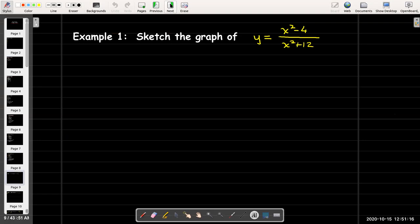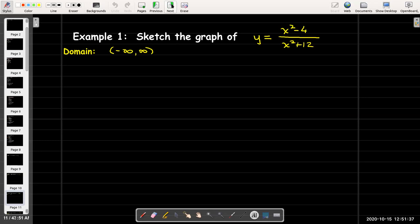So let's look at our first example. It's a rational function, y equals x squared minus 4 over x squared plus 12. When I look at the domain, the denominator can never be zero. It's a number squared, and then you add 12. Smallest it can ever be is 12. So the domain is all real numbers.